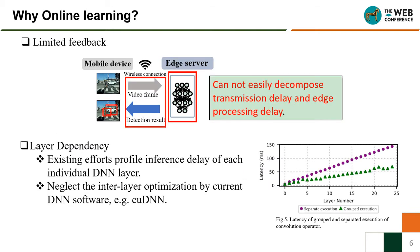The second drawback is the limited feedback. Mobile devices can observe the overall delay between sending the data and receiving the results from the edge server, but cannot easily decompose transmission delay and edge processing delay. The third drawback is that current offline profiling does not consider the layer dependency — it ignores the inter-layer optimization by DNN software such as cuDNN. In Figure 5, we can see there is an obvious gap between separate execution and grouped execution.